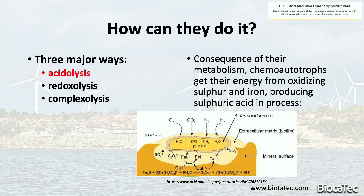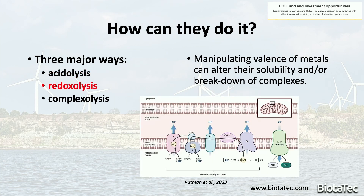This acidification is done by a group of organisms known as chemoautotrophs, and the acidification of the environment is a consequence of their metabolism. They get their energy from oxidizing inorganic compounds — iron and sulfur — producing sulfuric acid in the process. They are also known as acidophiles, which means that they are really good at resisting this kind of very acidic environment, and they actually thrive in that situation.